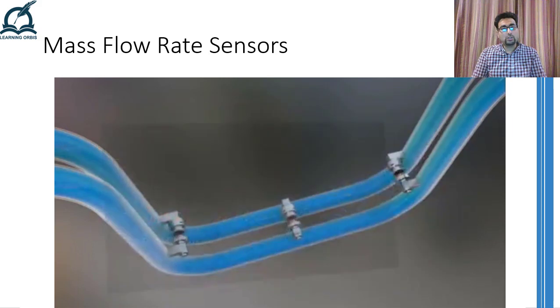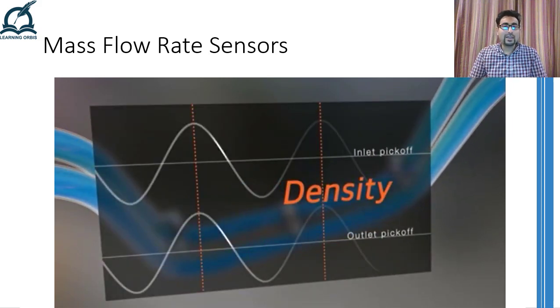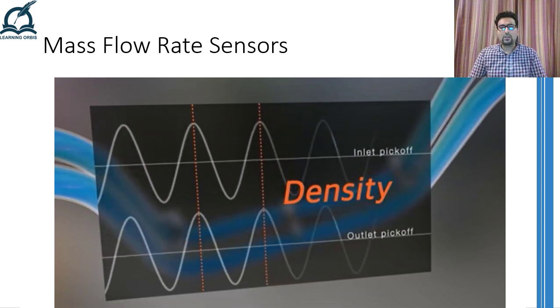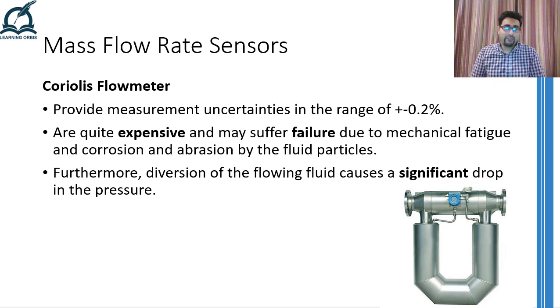Moreover, Coriolis flow meters may also be used to figure out the density of the fluid as it is inversely proportional to the square of the sensed vibration frequency. So if the density increases, the frequency will decrease and vice versa. Coriolis flow meters are expensive, accurate devices that can achieve measurement uncertainties in the range of ±0.2% of full scale. Moreover, the mechanical vibrations make these devices prone to mechanical fatigue that can reduce the lifetime significantly. On top of that, abrasion or corrosion due to fluid particles is another problem associated with these flow meters. Last but not the least, the diversion of the fluid into smaller cross-section pipes causes a significant pressure drop in the line. These disadvantages limit the use of Coriolis flow meters, but the accuracy and direct mass flow rate measurement allows them to be the first choice if you can manage the expenses a bit.